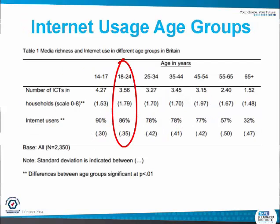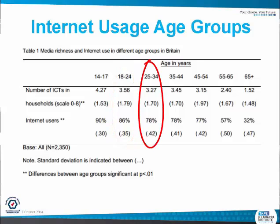With this you can note the internet usage age groups difference from Britain: for 18 to 24 year olds compared to 25 to 34 year olds, you can see it's slightly higher for internet usage — that being 86% for Naden's group and 78% for Joel's.